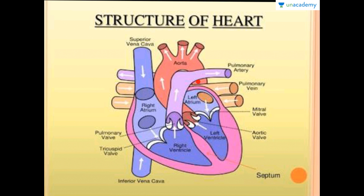We also have septa between the various chambers of the heart. Between the right atrium and left atrium we have the interatrial septum; between the right ventricle and left ventricle we have the interventricular septum; and between the atria and the ventricles we have the atrioventricular septa.